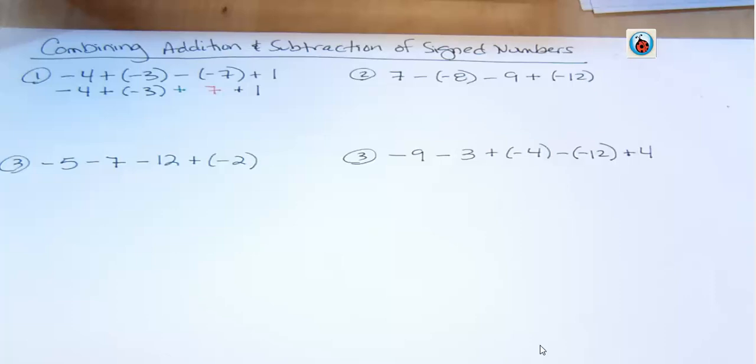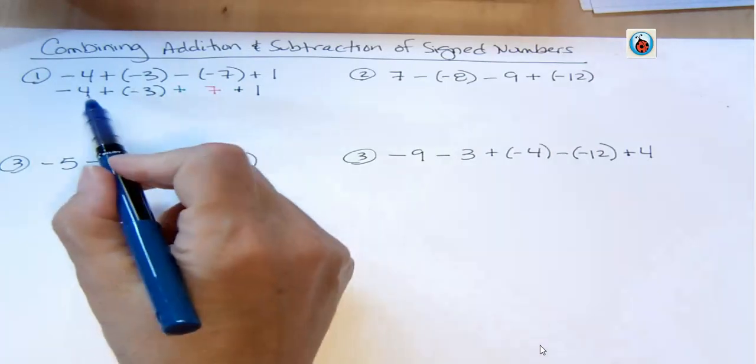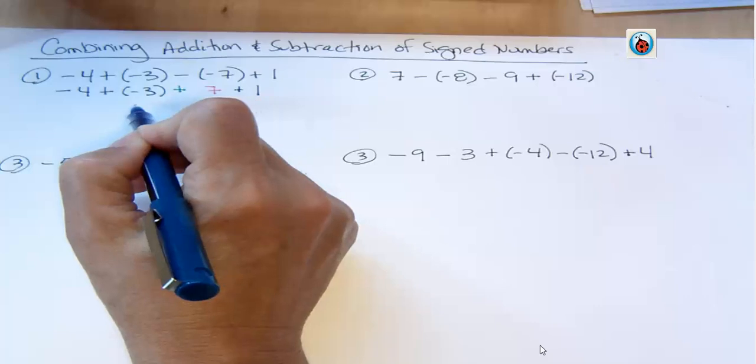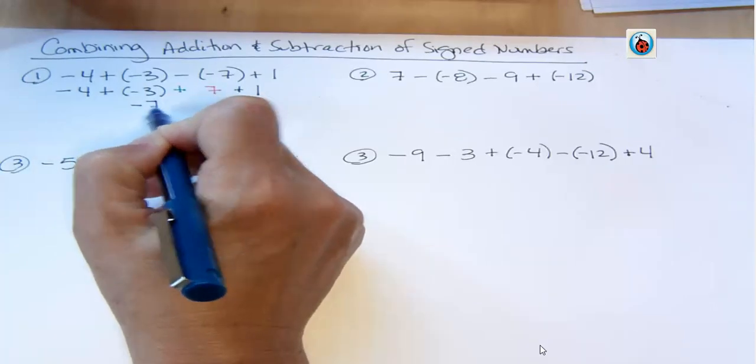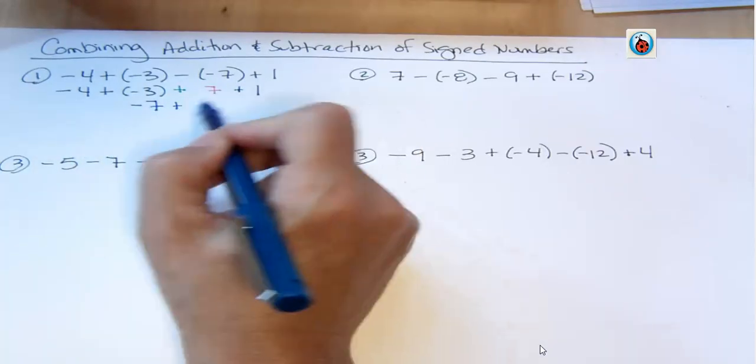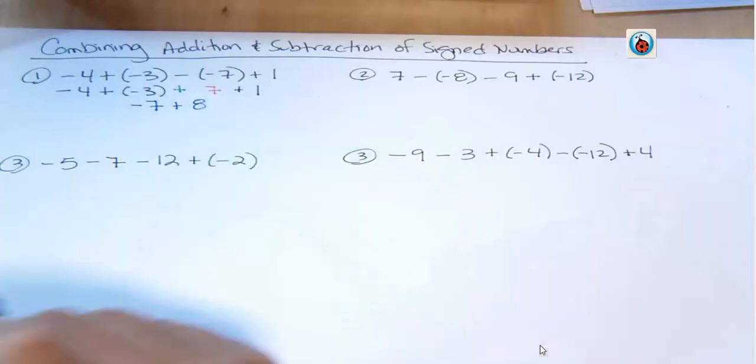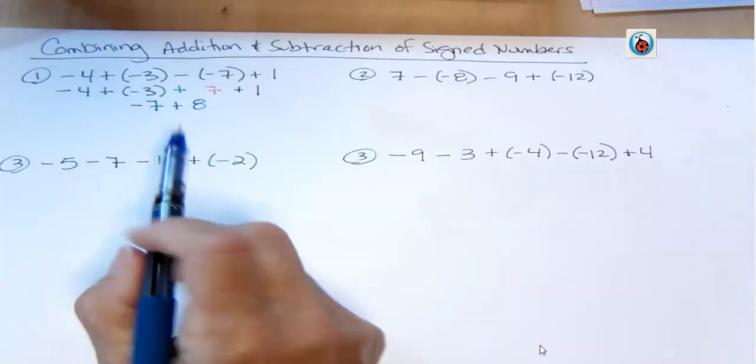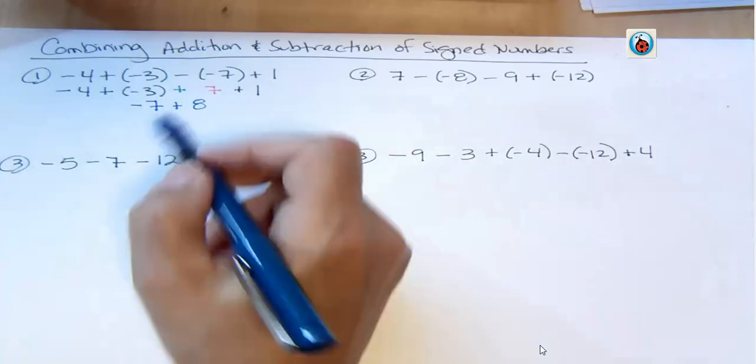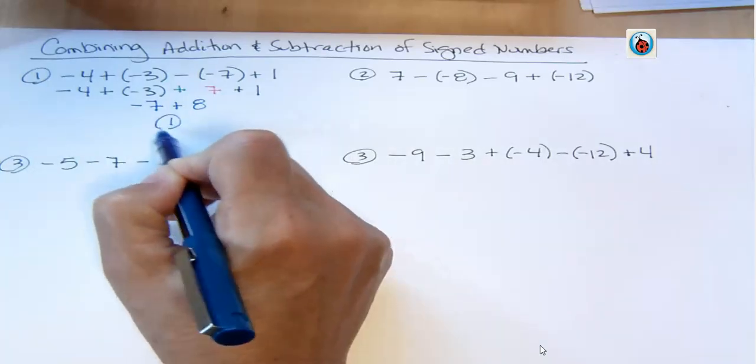Now I'm going to do my process that I've talked about before, which is combine all your negatives. You have negative 4 and negative 3. That's all negatives, negative 7. And combine your positives, 7 and 1, that's 8. And now that you've combined those, you're ready to say, what do I have more of? You have more positives. By how many? By 1, so the answer would be positive 1.